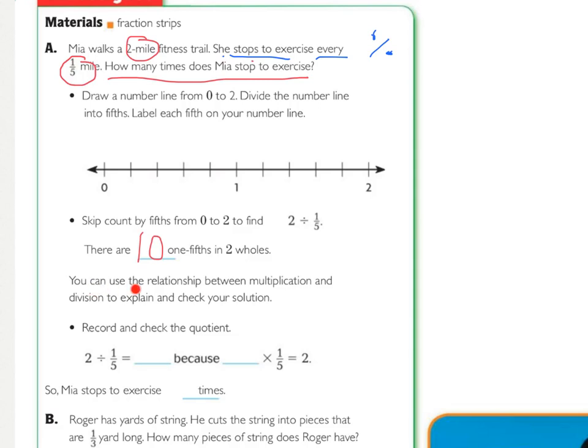Now we can use the relationship between multiplication and division to explain and check our solution. So we're recording and checking our quotient. 2 divided by 1 fifth equals, well we came up with 10.